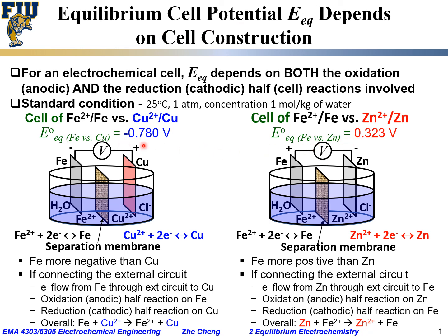So these two examples both involve Fe²⁺/Fe, but the other electrodes are different, and we see different equilibrium cell potentials: minus 0.780 volt for the cell on the left versus positive 0.323 volt for the cell on the right. This confirms what we said before — E_EQ depends on cell construction, specifically on both the anodic and cathodic half-cell reactions involved.